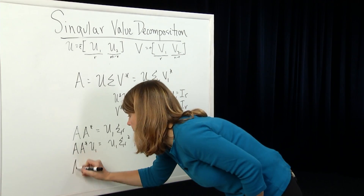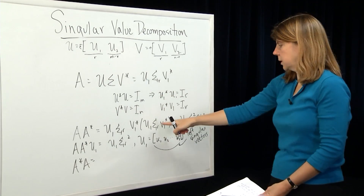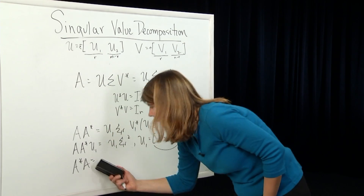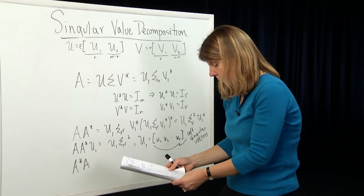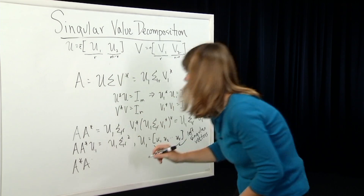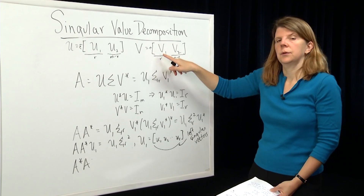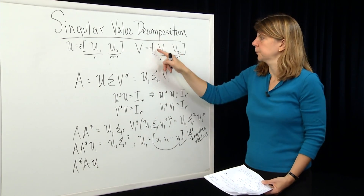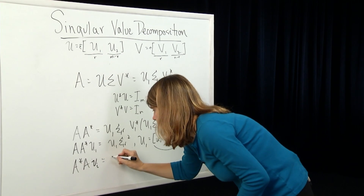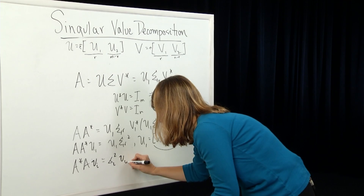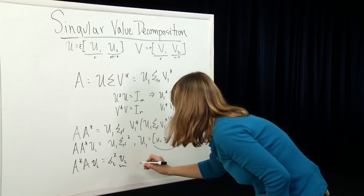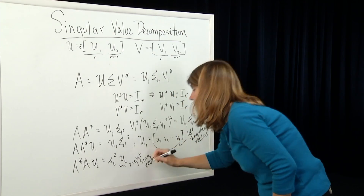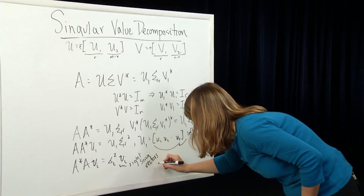Similarly, looking at A* A and applying the same steps, we find that A* A vᵢ equals σᵢ² vᵢ, where v₁ through v_r are the first R columns of the matrix V1. These are called the right singular vectors associated with the singular values of the matrix A.